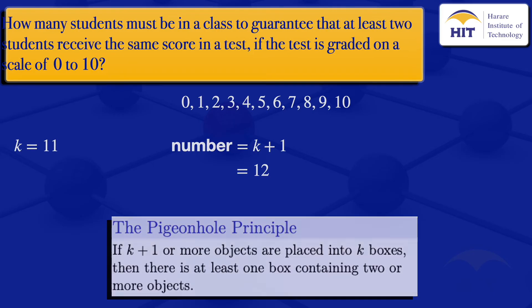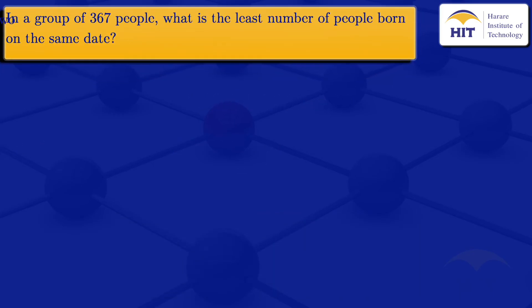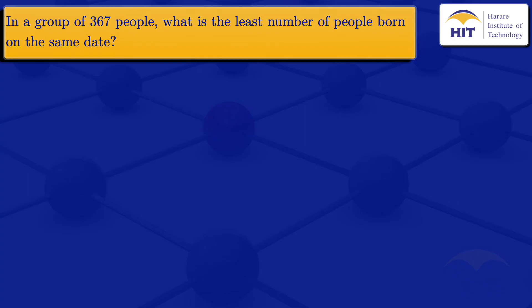And now move on to the next question which says that in a group of 367 people, what is the least number of people born on the same date?